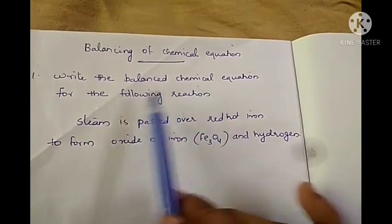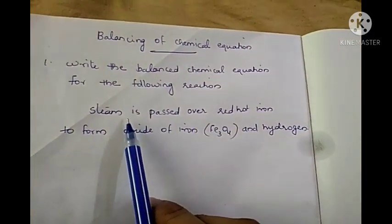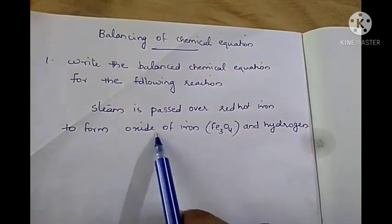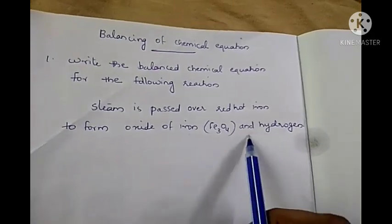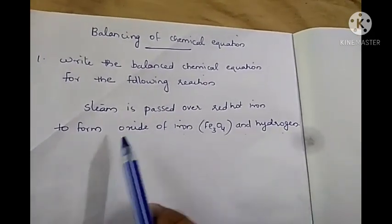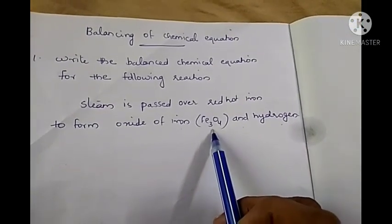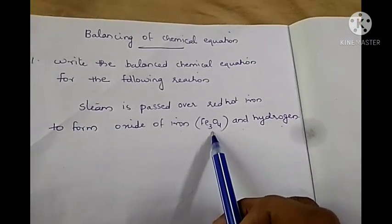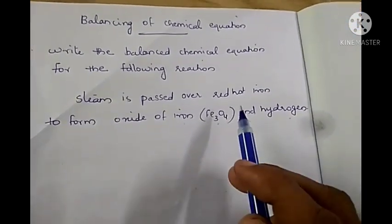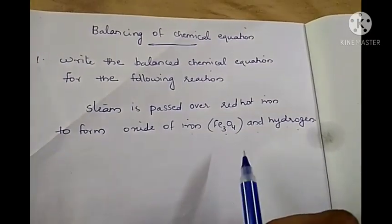Write the balanced chemical equation for the following reaction. The chemical reaction given here is: steam is passed over red hot iron to form oxide of iron and hydrogen. The formula of the oxide of iron formed is Fe3O4, along with that hydrogen is also produced. This is the chemical reaction taking place and we have to balance its equation.